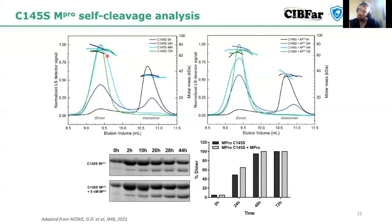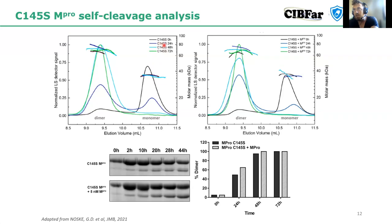Coming back to biochemistry, what we saw for this C145S M-pro mutant was that it was not a static sample — it was actually quite dynamic. Although we designed the mutation to abolish activity, we could see by analyzing oligomeric states that over the course of a few days, the protein completely changed its behavior and oligomeric states, converging into dimers.